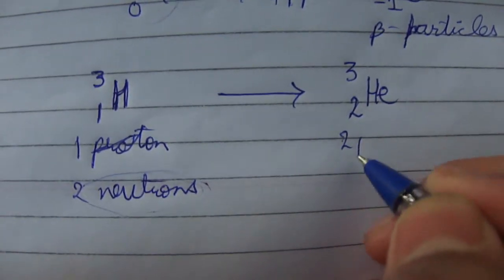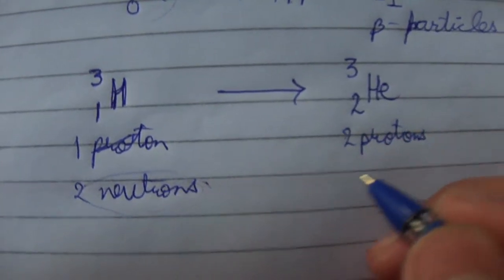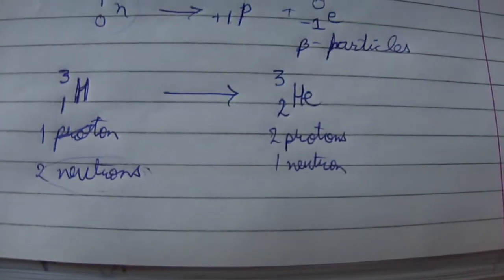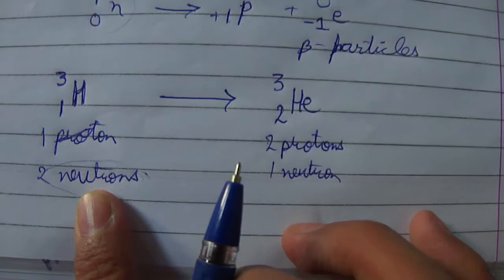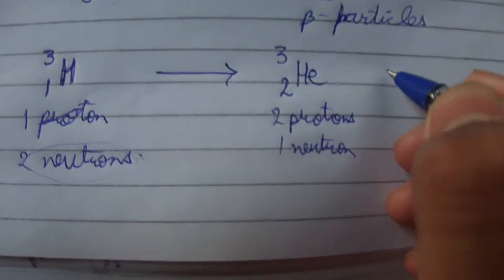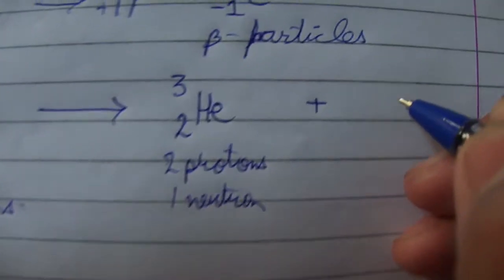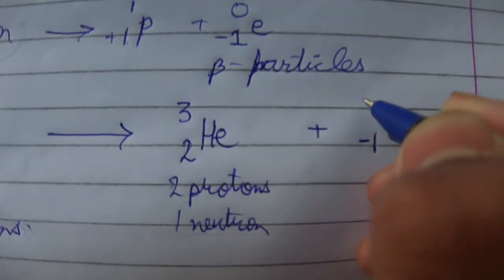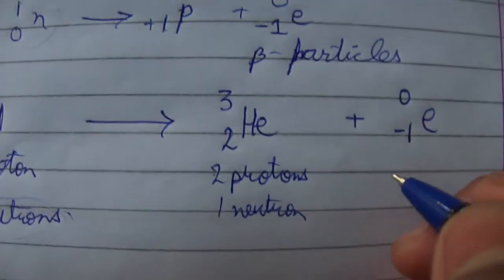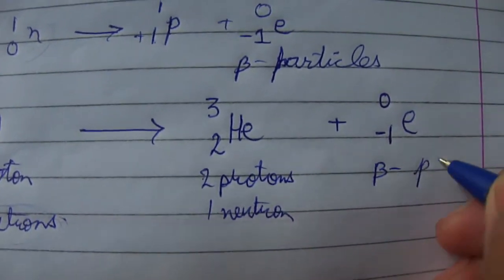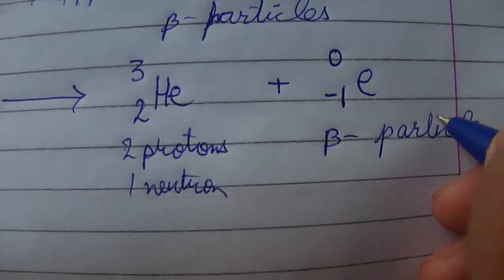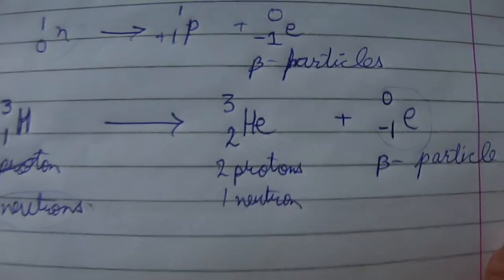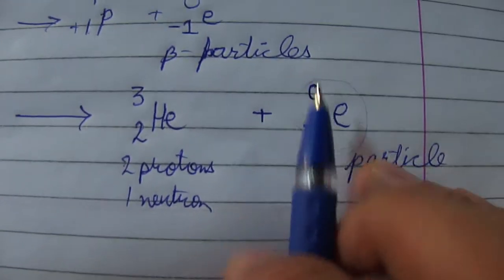The helium atom has two protons and one neutron. One neutron was converted into one proton and one electron — this electron has charge minus one and mass zero, and this is the beta particle. Electrons are not stable in the nucleus, so this electron is emitted from the nucleus in the form of a beta particle.